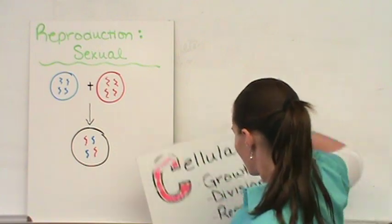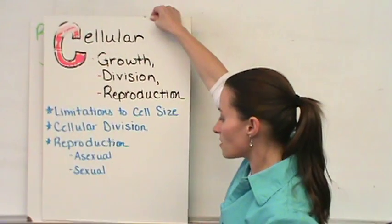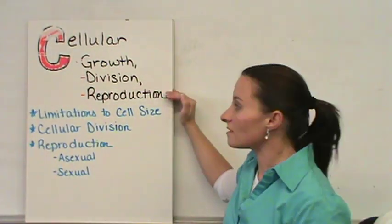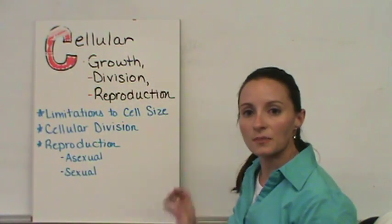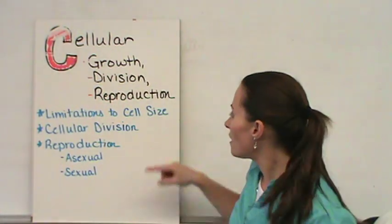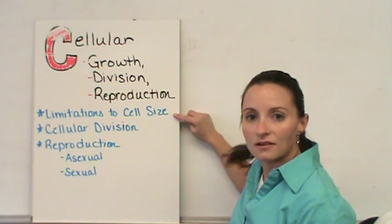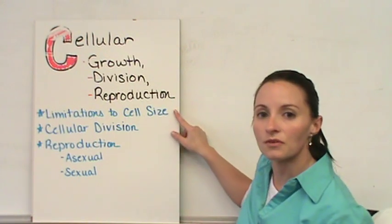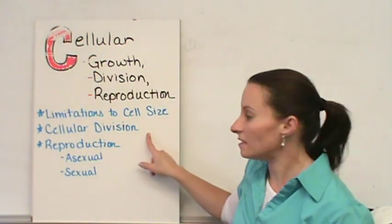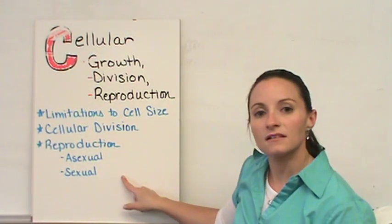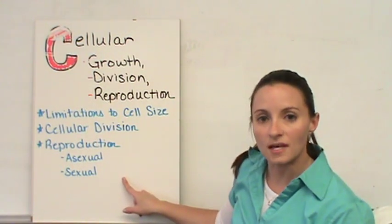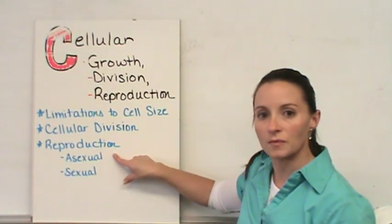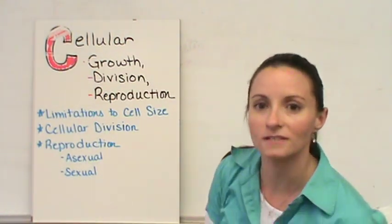This was our video lecture on cellular growth, division, and reproduction. Now you should be able to understand the limitations to cell growth, why cells need to divide, and the two major types of reproduction: asexual reproduction and sexual reproduction.